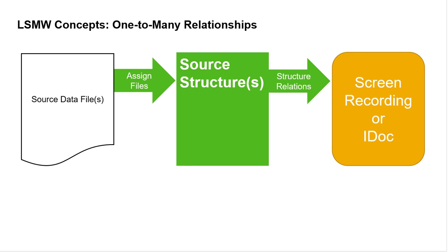The first concept to deal with is one-to-many relationships. Think about this as the possible difference in shape between the target and source data structures — you've got to bring these two shapes into alignment. These relationships are defined by source structures. Source data files are assigned to source structures, usually one-to-one, so source structures are essentially the same as the data files. Source structures are assigned to target structures by structure relations. Target structures could be validity areas in a screen recording or segments in an IDoc. Conceptualizing and defining one-to-many relationships is probably the most difficult LSMW concept to master, but it's more or less irrelevant for simple cases.